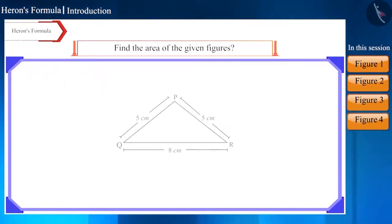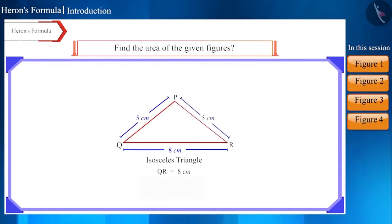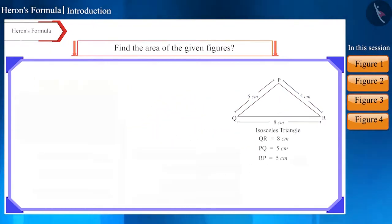Now let's move to the next triangle. This is an isosceles triangle, the length of whose base QR is 8 cm and the length of sides PQ and RP is 5 cm respectively. Let's find its area using Heron's formula.